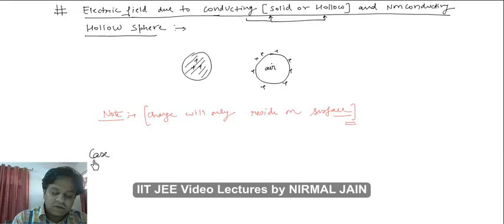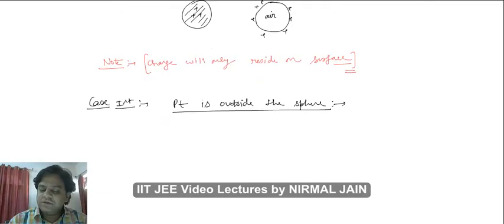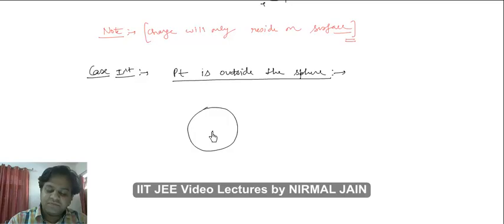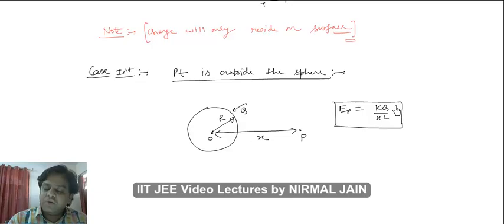We will deal with three cases. Case one: if the point of observation — the point at which electric field is to be found — is outside the sphere. Let's say this is the sphere of radius r having charge q, and a point p is at a distance x from the center of the sphere.